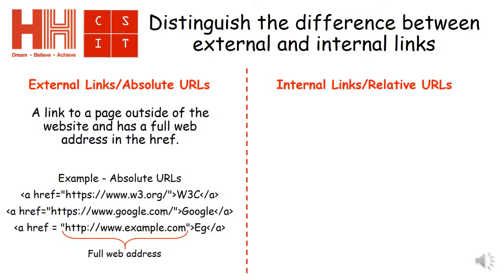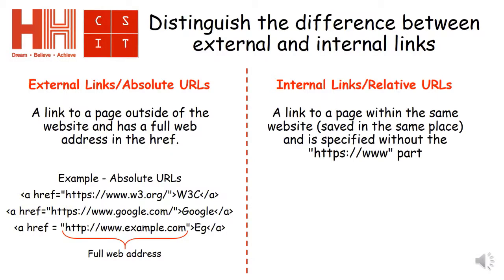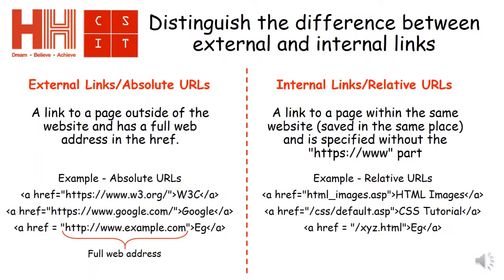This is opposed to internal links, which are officially called Relative URLs. These are links to a page within the same website, saved in the same place, and specified without the HTTP or WWW part. You can see below there are some examples — just the link to the page within the website, rather than needing the HTTP.